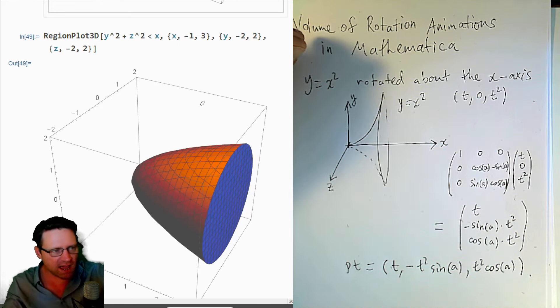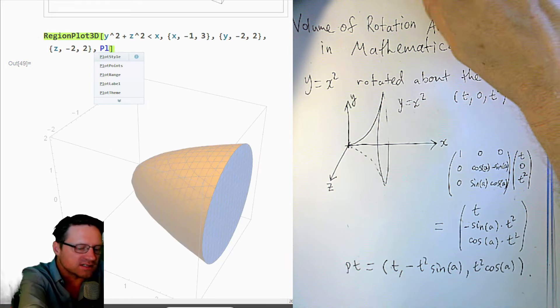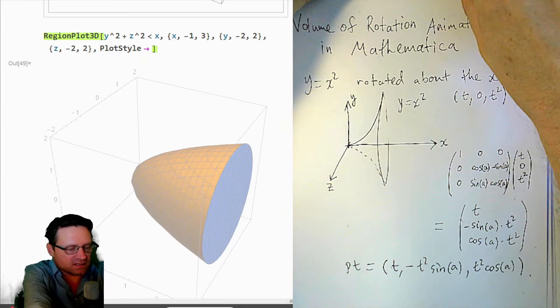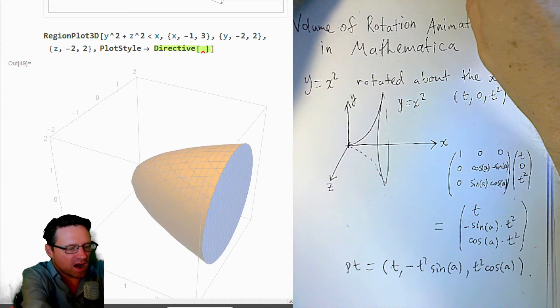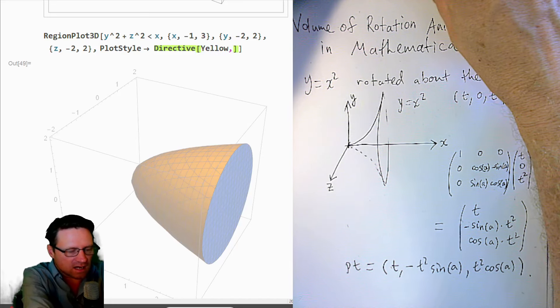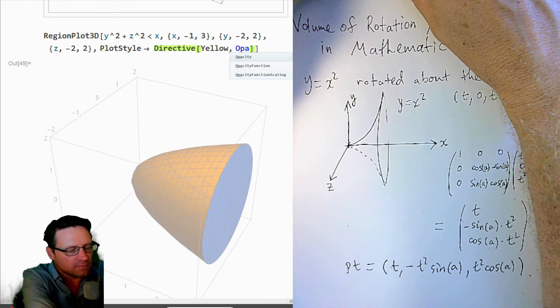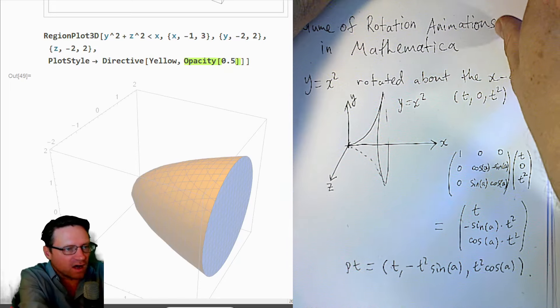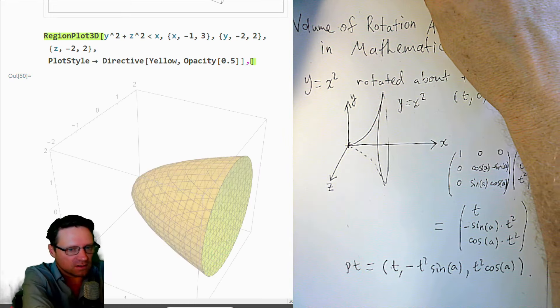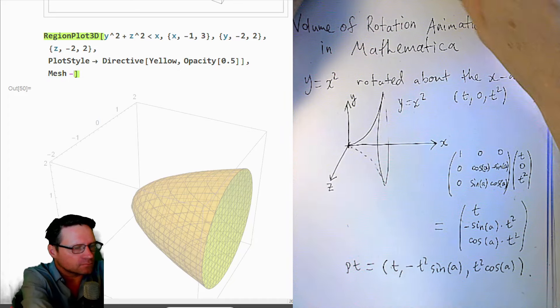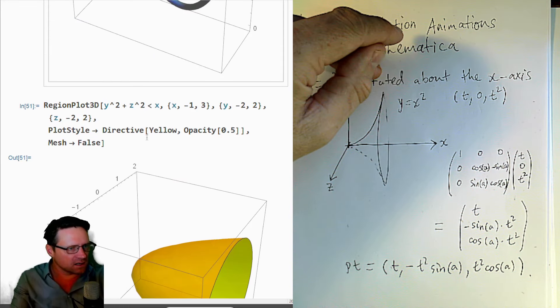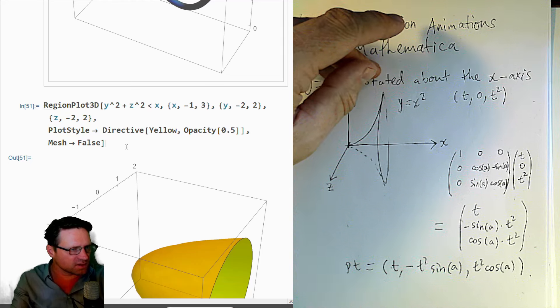Okay, so this is about what we want. I want to add some options to this. So let's go plot style, directive. Now I want to put directive, square brackets. Let's change the color to yellow. And let's say opacity 0.5. Let's see what this does. Now, I don't really want the grid there or the mesh. So let's put mesh false. Okay, there we go. So this looks about like what I want.